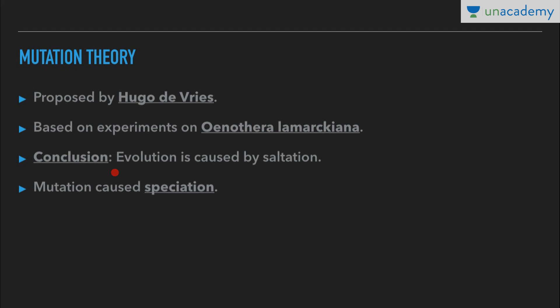The conclusion of this theory was that evolution is caused by mutation. From experimenting on the Evening Primrose, he brought forth the idea of mutations — large differences arising suddenly in a population — which he called Saltation, that is a single-step large mutation. This mutation caused speciation, so he considered mutation as the main cause of evolution.